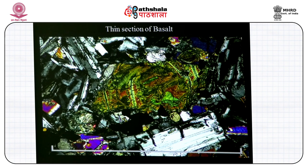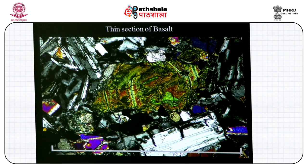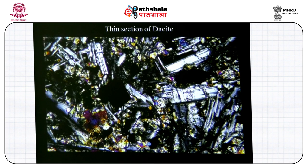A thin section of basalt shows that it is mostly plagioclase and some pyroxene — highly magnified because it is a very fine-grained rock — and it is equivalent to gabbro when plutonic. Dacite is equivalent to granodiorite and has more plagioclase, some pyroxene, and some amphiboles; composition-wise it is an intermediate rock.